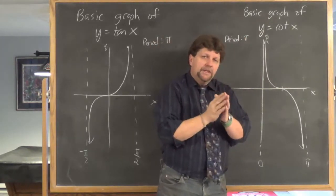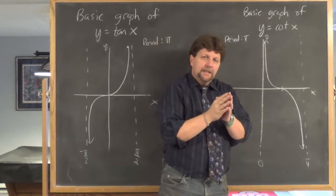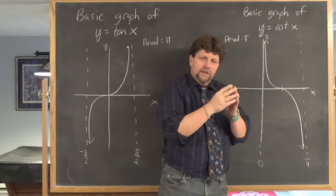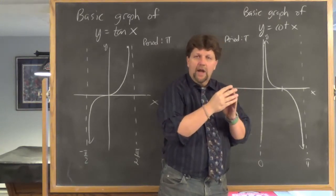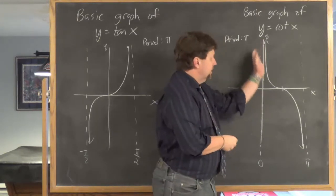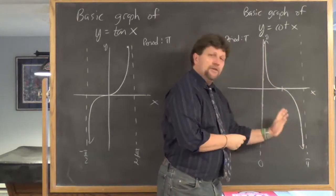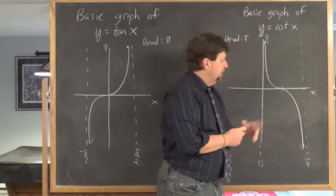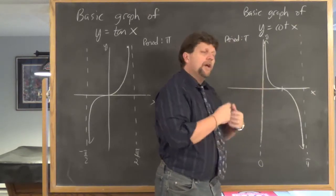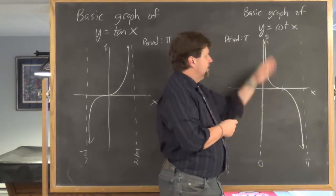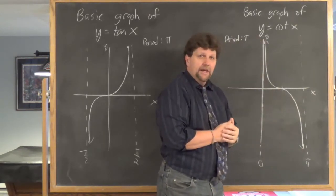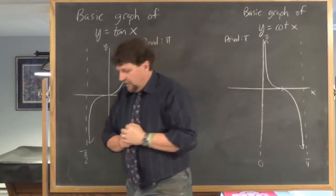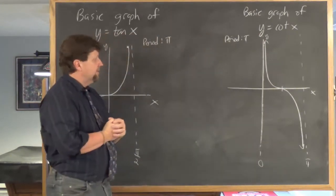Remember, the period is the smallest interval you need to see the shape and know what the graph looks like everywhere — so this behavior is just repeated forever. When you hear cotangent x, have this picture pop into your head. That's the basic graphs of tangent and cotangent.